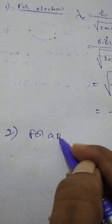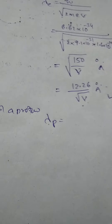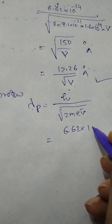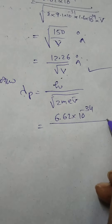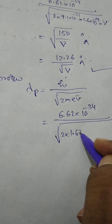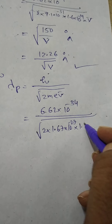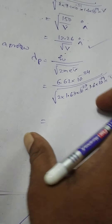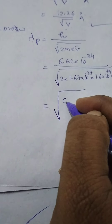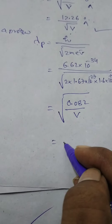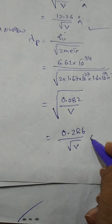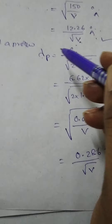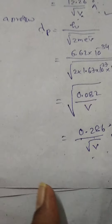For a proton, lambda for proton is equal to h by root of 2M into eV. H is equal to 6.62 into 10 power minus 34 joule-seconds, by root of 2 into mass of the proton 1.67 into 10 power minus 27 kilograms into charge 1.6 into 10 power minus 19 into V, where V is the potential difference. On solving, it is nearly root of 0.082 by V, or 0.286 by root V angstrom units.